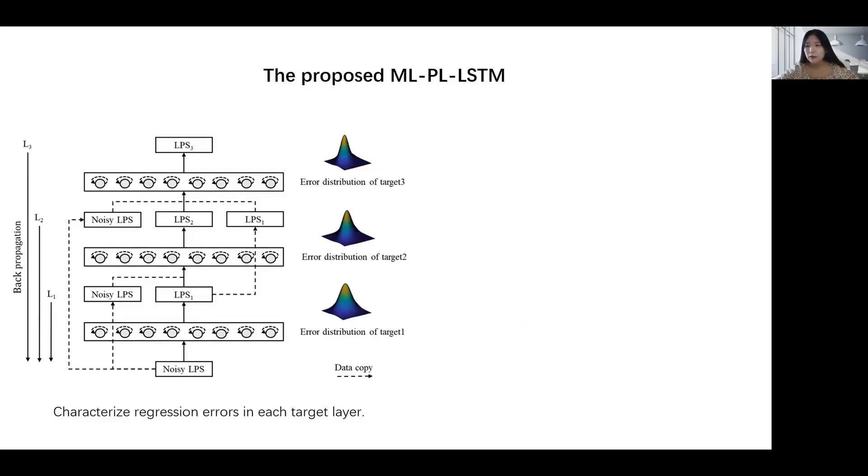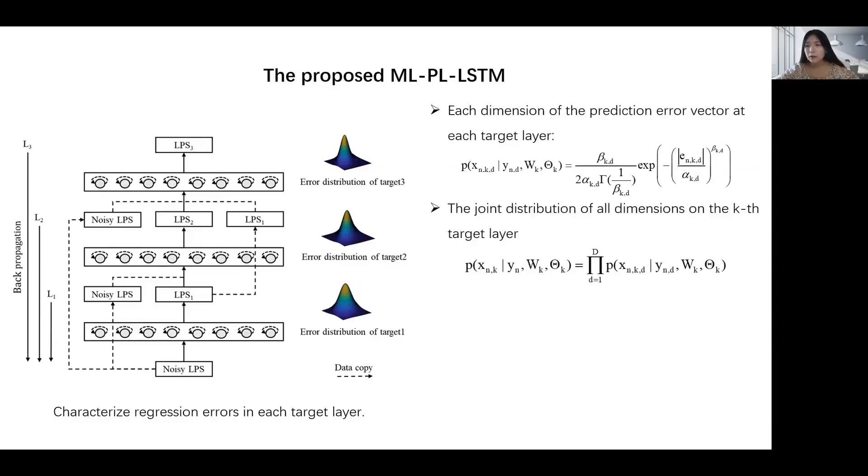First, we built the GGD error model for each target layer. Under the assumption that the distribution in each dimension is independent, the joint distribution of all dimensions is as follows. Then we can get the joint prediction error distribution of multiple target layers.